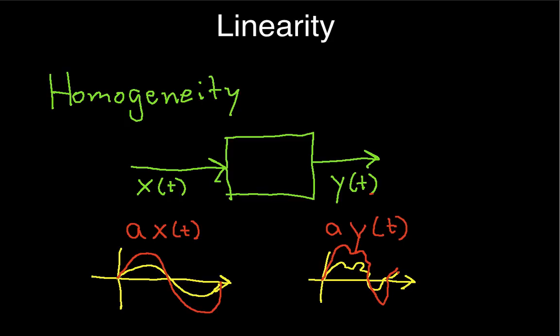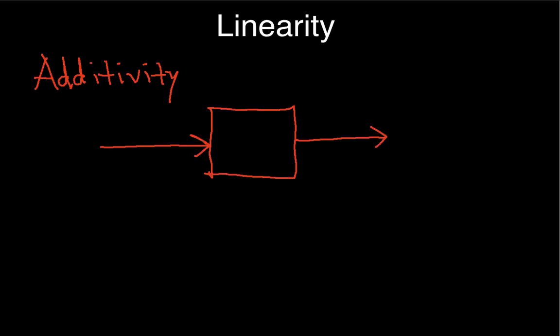The second condition that has to be met in order for a system to be linear is additivity. The system is additive if the following conditions hold. We've got our system with an input and an output.